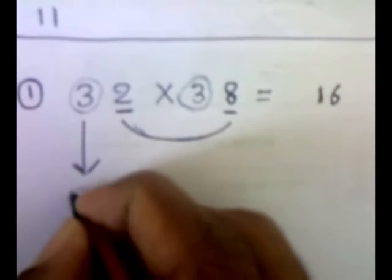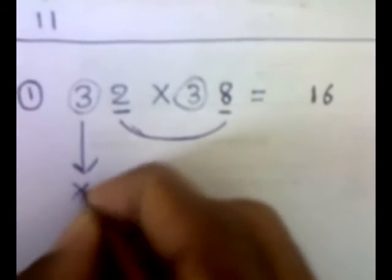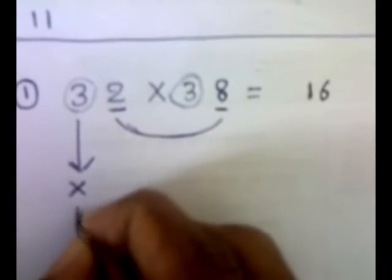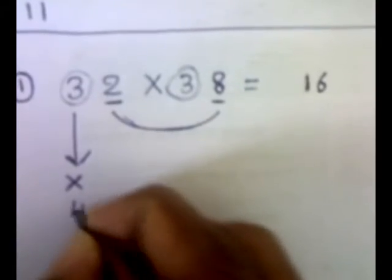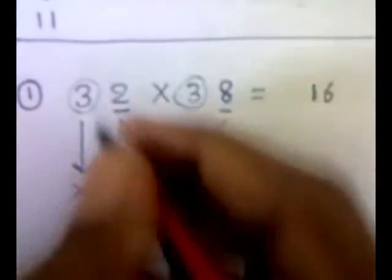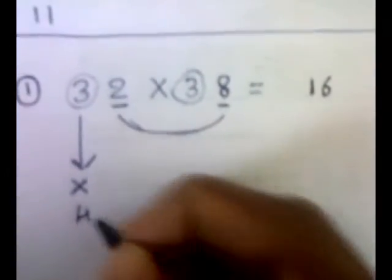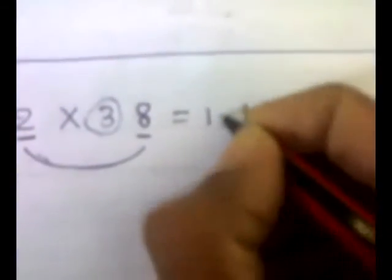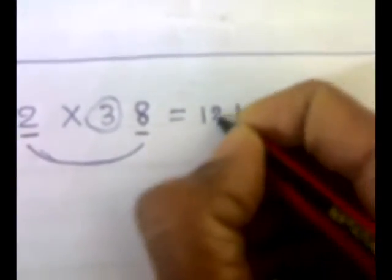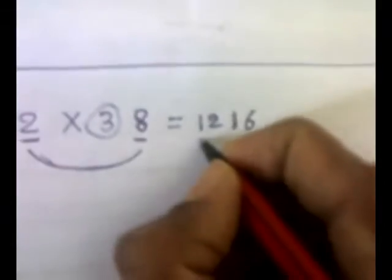So we will multiply 3 by the very next digit, that is 4. After 3, that is 4. So 3 times 4 is 12. So we will put 12 here. So this is the answer.